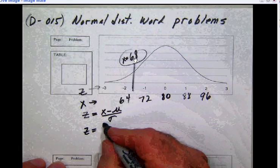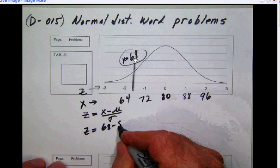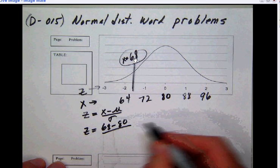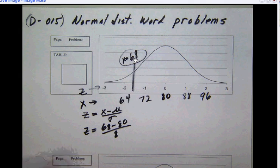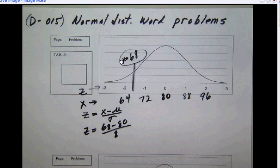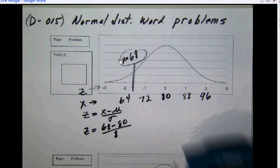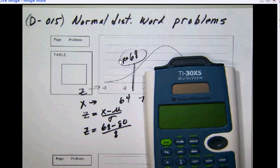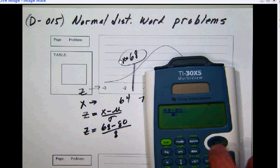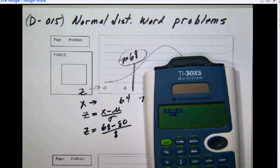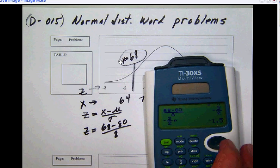Let's hop over here to our trusty TI-30XS and let's just do that problem. Let's use the fraction button. On the top of the fraction we'll go 68 minus 80, on the bottom of the fraction 8, and we'll calculate that. Let's turn that into a decimal, and we see that our decimal value for z is negative 1.5.